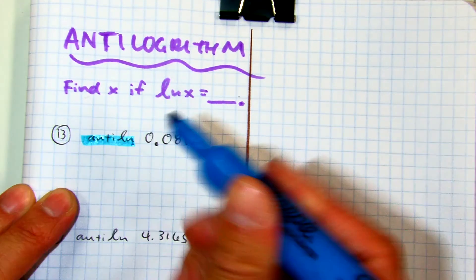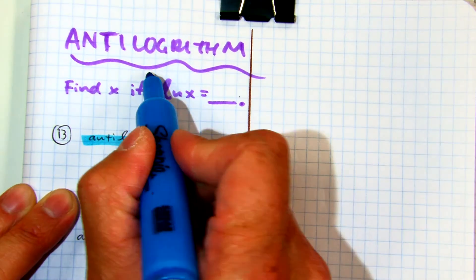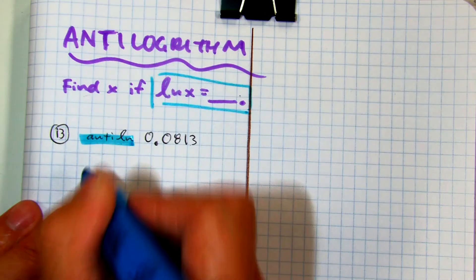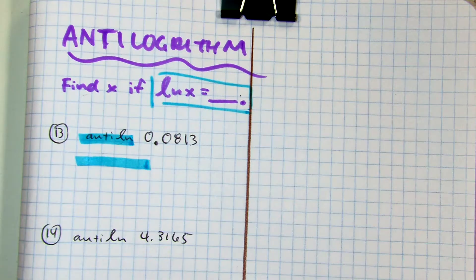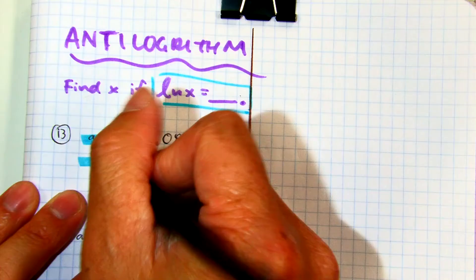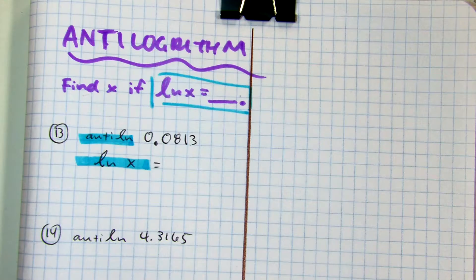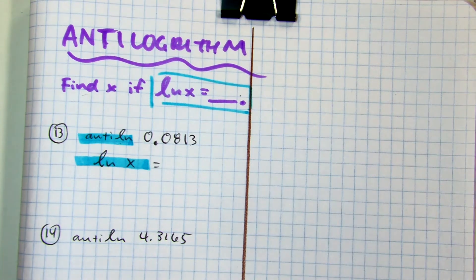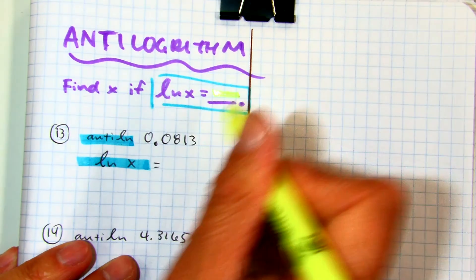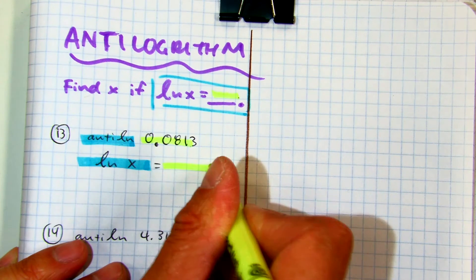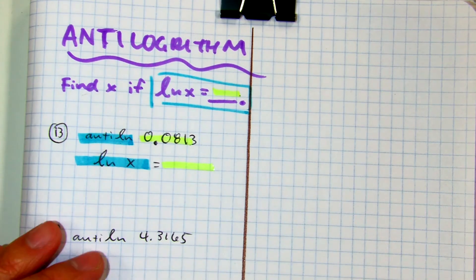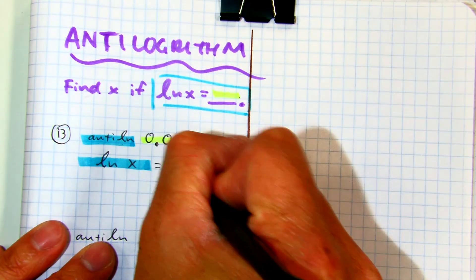And if you see the anti-log, you're just going to put this sentence frame there. Ln of x equals, and then your blank is the number. So whatever you're going to put in this blank is this number right here, 0.0813.